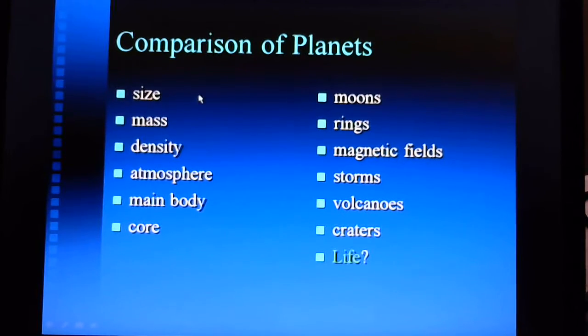For one thing, size. The gas giants are the giant planets. They're the largest ones in the solar system. So our home like Earth and the other terrestrial planets are the smaller planets in the solar system.